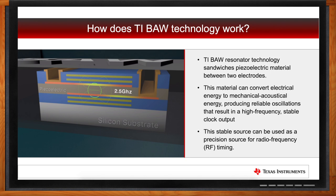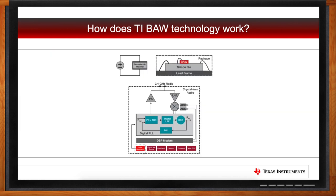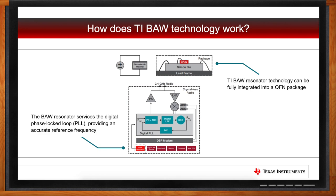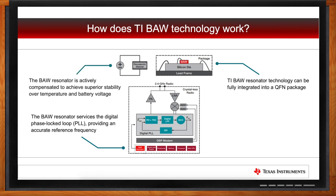It's a very stable and precision source from this microelectromechanical system. The BAW device fits into a regular QFN package — you'll have your lead frame, your silicon die, and the BAW device is very small and can sit on top of that silicon die, fully integrated into the QFN package. That BAW device services the phase-locked loop or PLL circuit of our wireless MCU and provides an accurate clocking reference frequency for the RF system. We can also compensate to keep that resonance stable over temperature and battery voltage fluctuations.